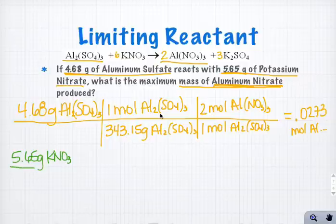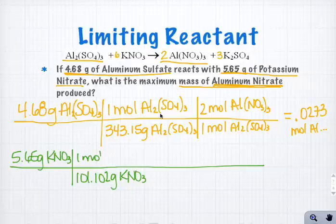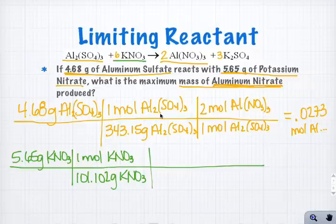And I'm going to convert that to an amount of the same product. So each mole of potassium nitrate has a mass of 101.102 grams per mole. And coming up to my balanced equation, I see that I have 6 moles of potassium nitrate to every 2 moles of aluminum nitrate. So I'm going to fill that in right here.